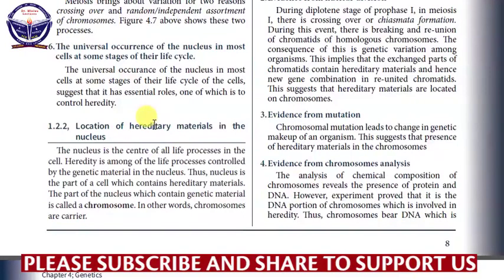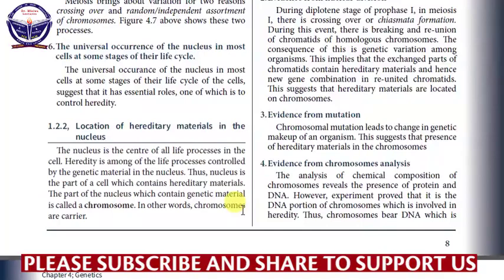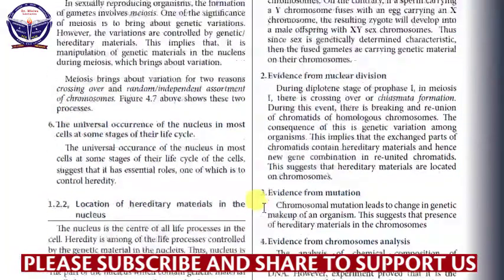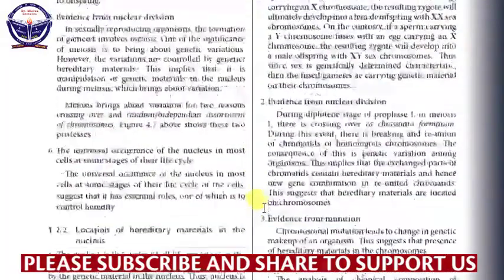We have already narrowed it down: from the cell to the nucleus. Now inside the nucleus, where will we find the hereditary materials? The nucleus is the center of all life processes in the cell. Heredity is among the life processes controlled by the genetic material in the nucleus. Thus, the nucleus is the part of the cell which contains hereditary materials. The part of the nucleus which contains genetic material is called a chromosome. In other words, chromosomes are carriers of genetic material.